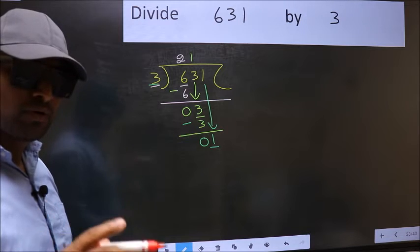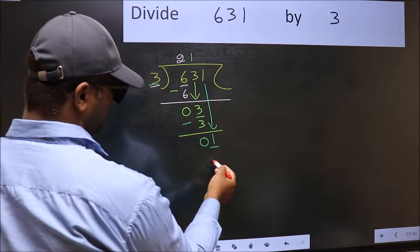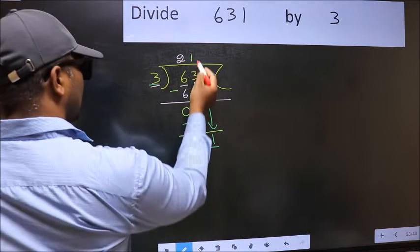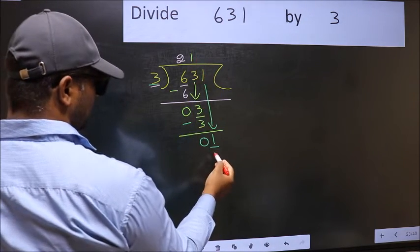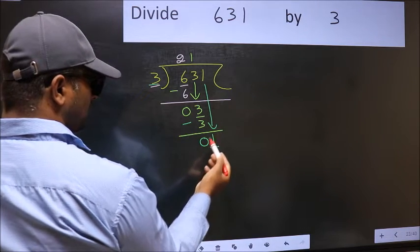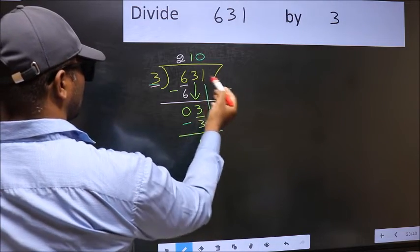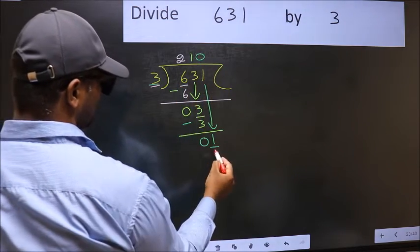Instead what you should think of doing is what number should we write here. If I take 1 here I will get 3. But 3 is larger than 1. So what we should do is we should take 0. So 3 into 0, 0.